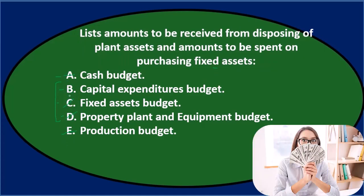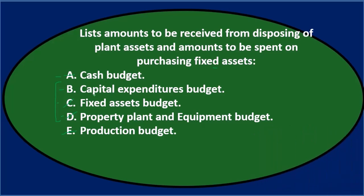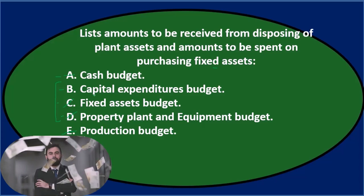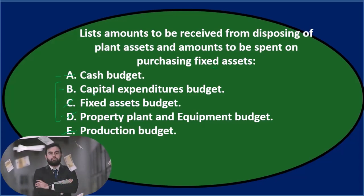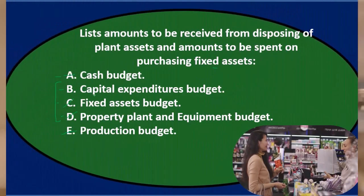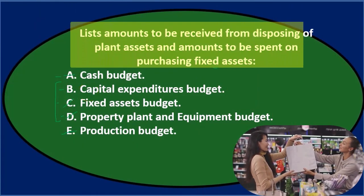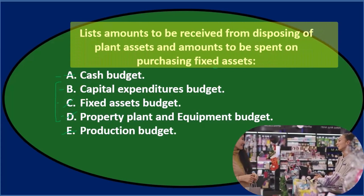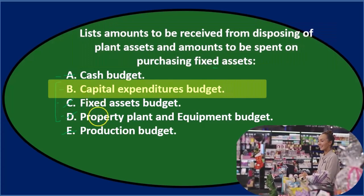When you hear capital expenditures in the context of budgeting, the term 'capital' can be confusing because it means different things in different contexts. In this case, capital expenditures means expenditures for things like fixed assets or property, plant, and equipment. So we're either selling property, plant, and equipment and receiving money for those sales — not inventory, but depreciable assets we use — or we're purchasing property, plant, and equipment, which is probably more likely. Final answer: lists amounts to be received from disposing of plant assets and amounts to be spent on purchasing fixed assets. Answer B: Capital expenditures budget.